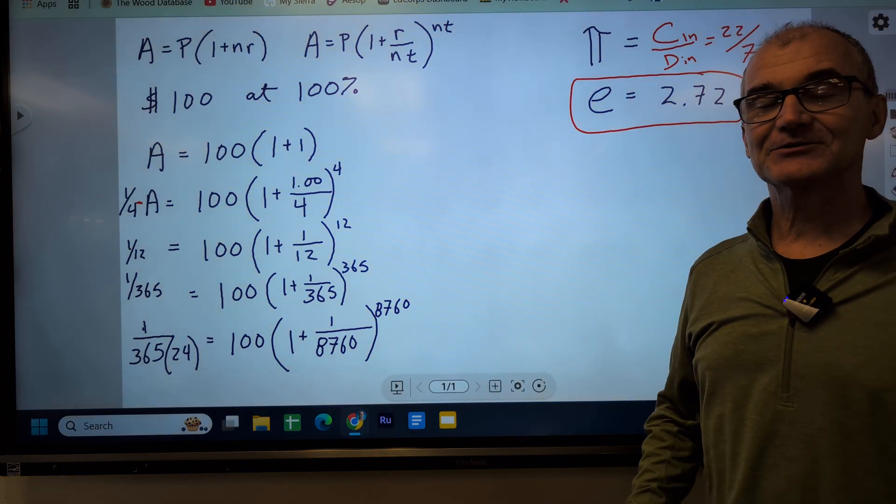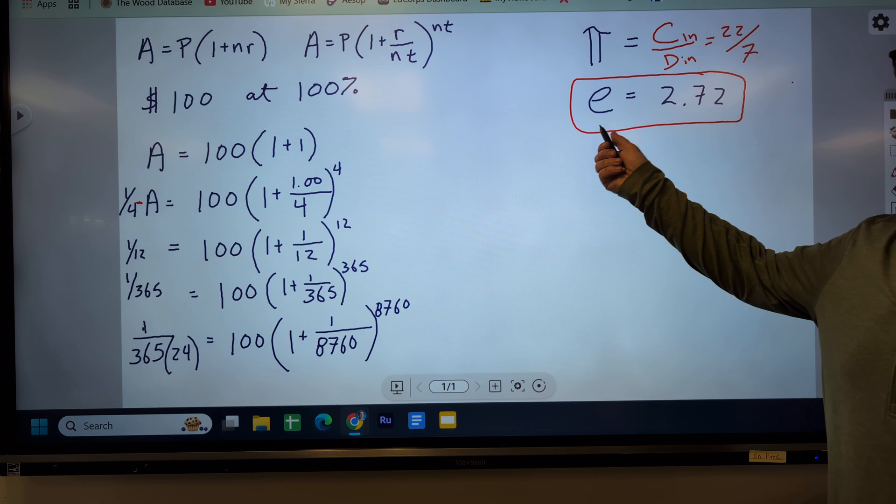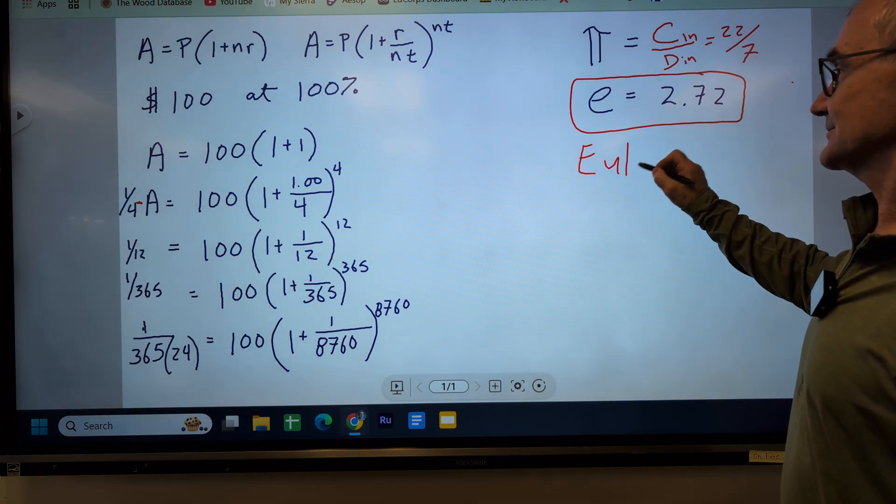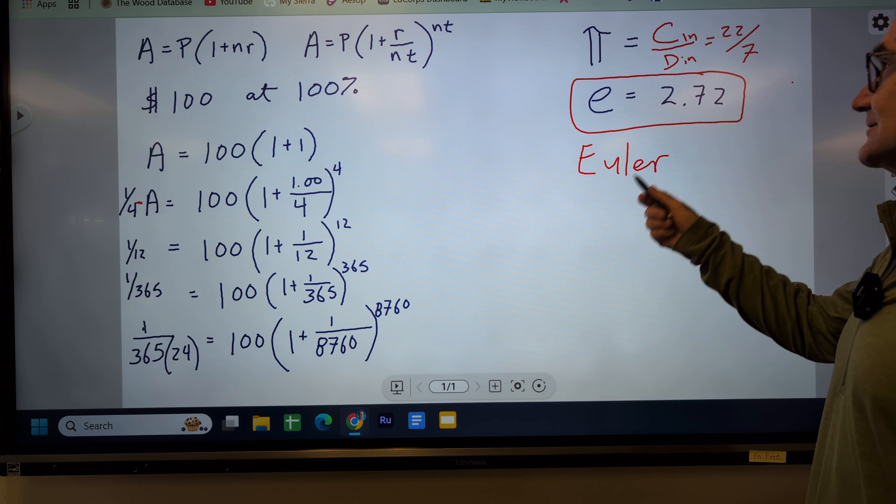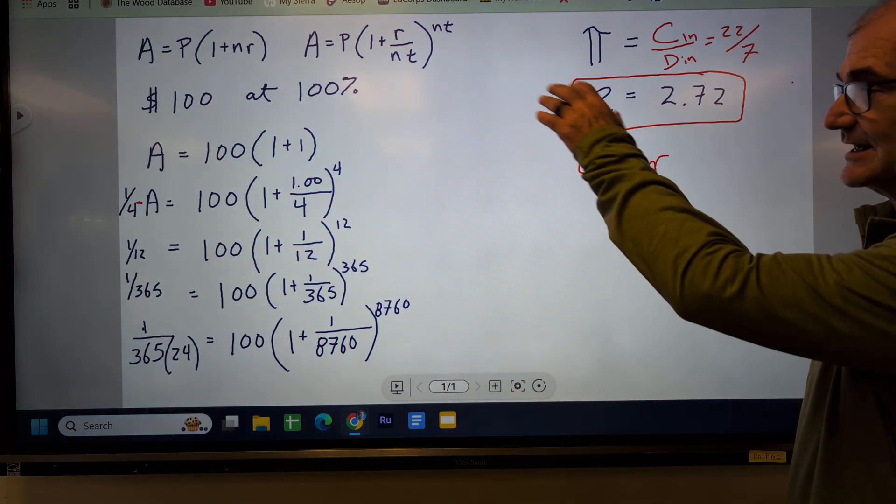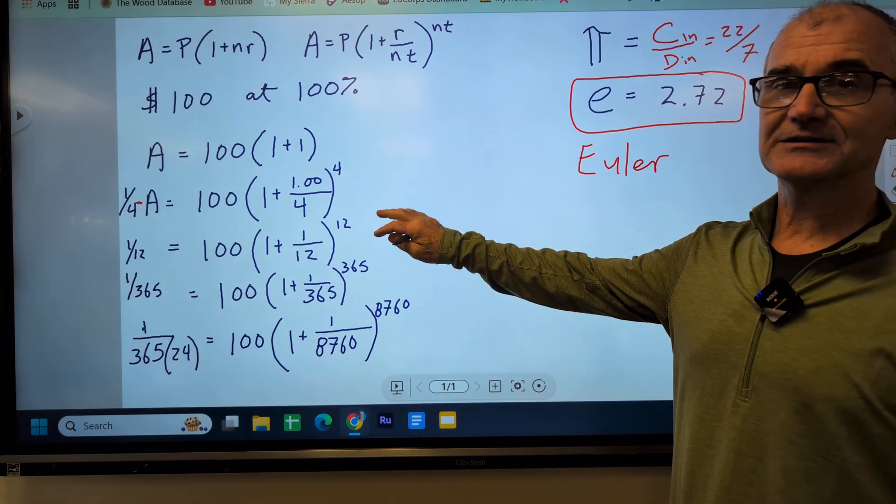Hey, fellow problem solvers, Colfax Math here. Today's video is going to be on Euler's number. Euler, it looks like it's spelled Euler, but it's pronounced Euler. Euler's number is 2.72. I'm going to show you how Bernoulli came up with the idea of Euler's number through compound interest.